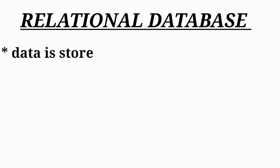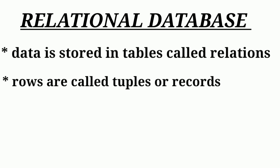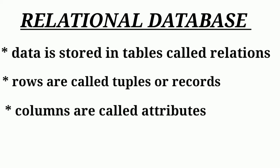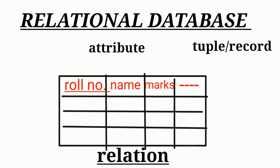Data in a relational database is stored in tables called relations, as a set of rows and columns. Rows are called tuples or records, and columns are called attributes. So to summarize: tables are relations, rows are tuples or records, and columns are attributes.